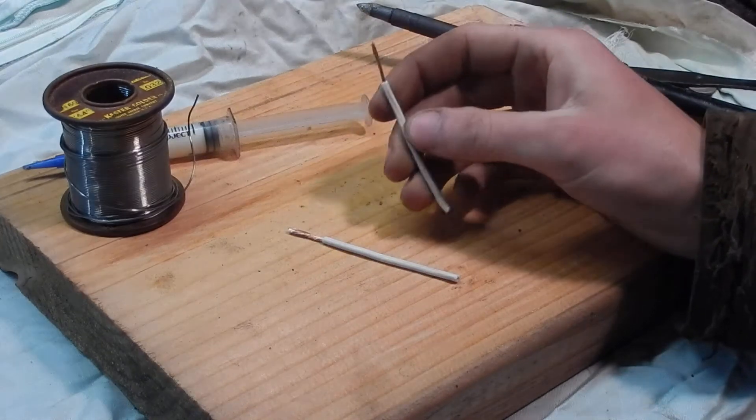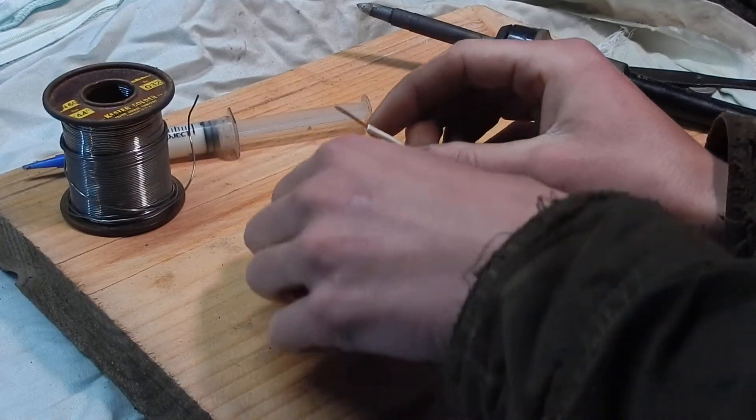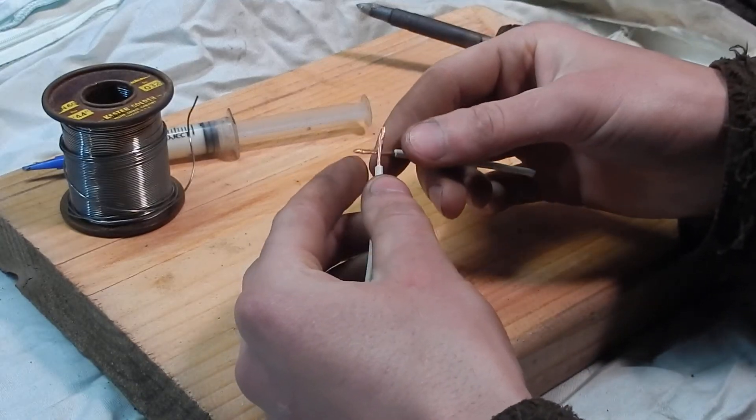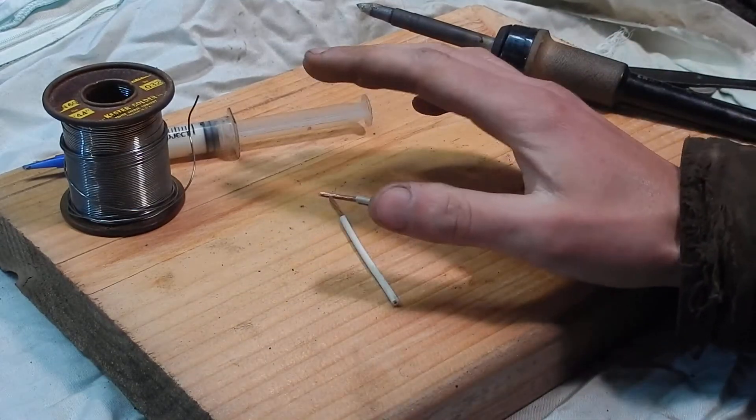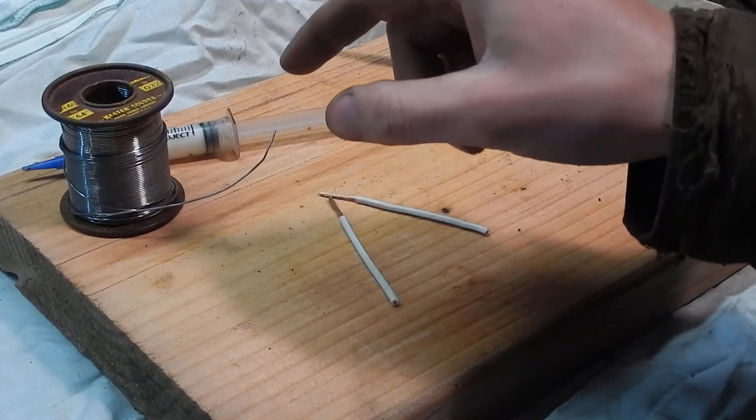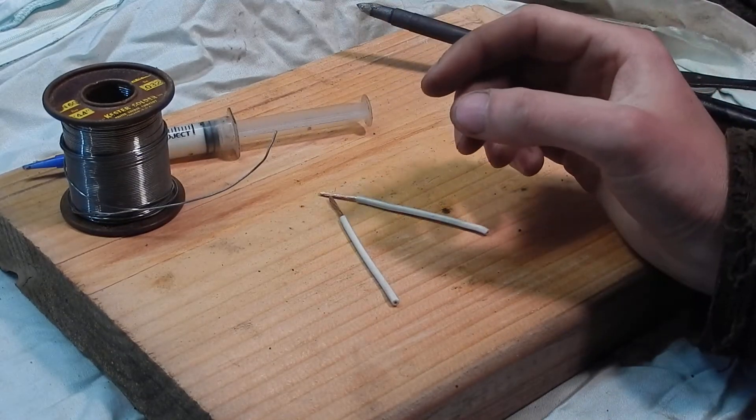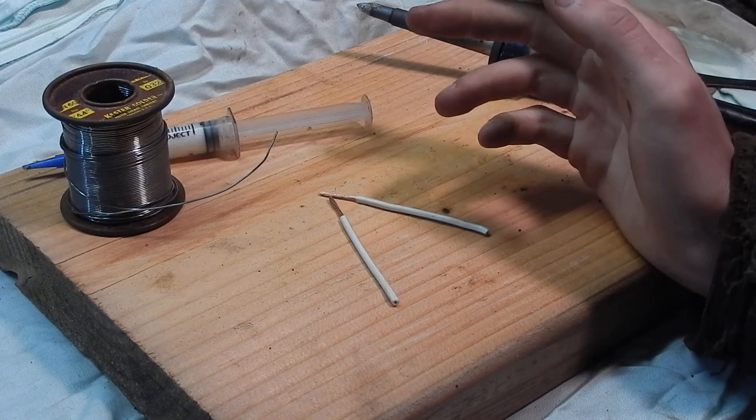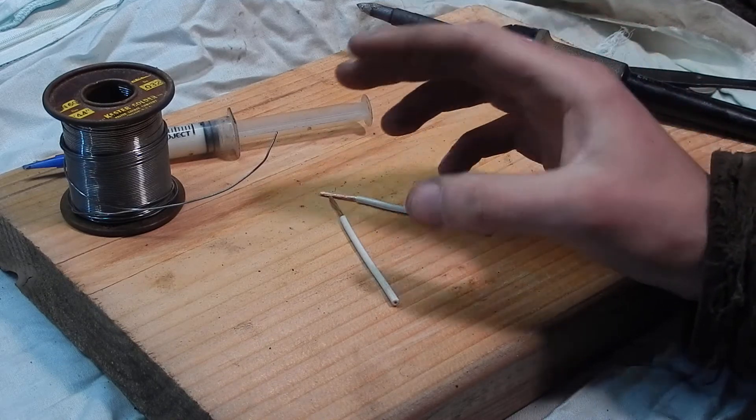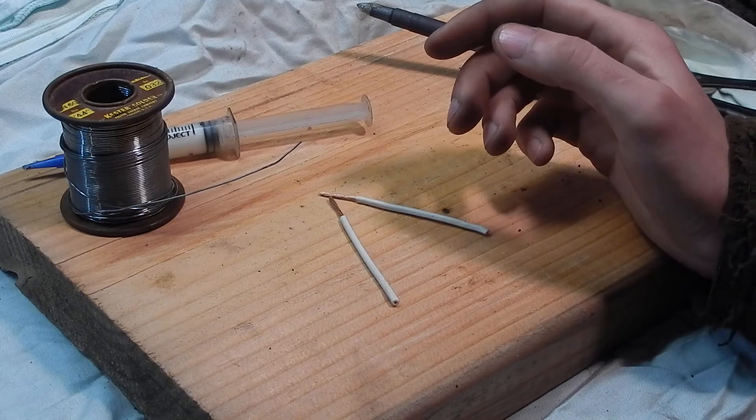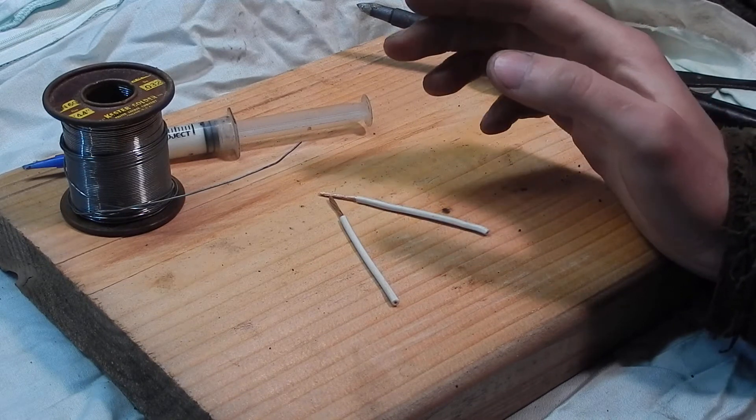When you're soldering, if your solder just beads up on the joint, your joint's hot enough to melt solder but it's not properly cleaned for whatever reason. No matter how much heat or how much solder you push into that joint, it's never going to work because that solder doesn't want to wick in, it doesn't want to wet the joint.